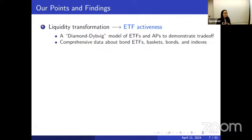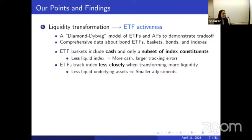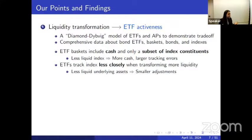To highlight this point, we build a Diamond-Dybvig style model where the twist is that we have ETFs and APs, which highlights the key economic mechanism. We test the model's predictions using comprehensive data on corporate bond index-tracking ETFs, where illiquidity and liquidity transformation are a big concern. We find that ETF baskets optimally include cash — even though the indexes themselves do not include cash — and they include only a subset of index constituents. Moreover, if the underlying index is more illiquid, the cash share is larger and the tracking error is also larger.